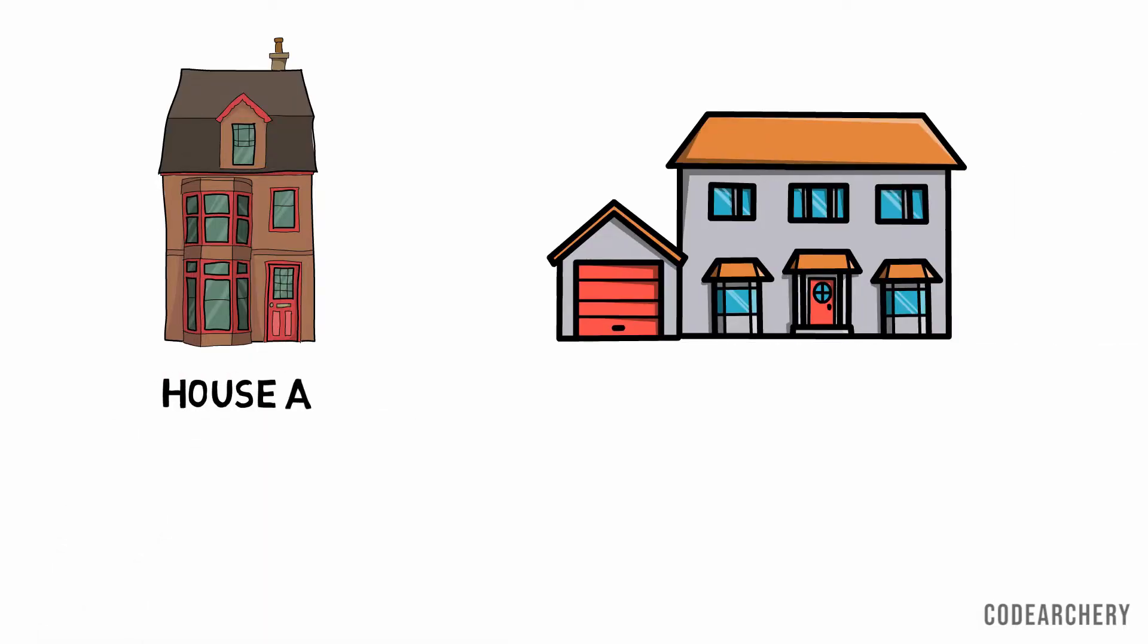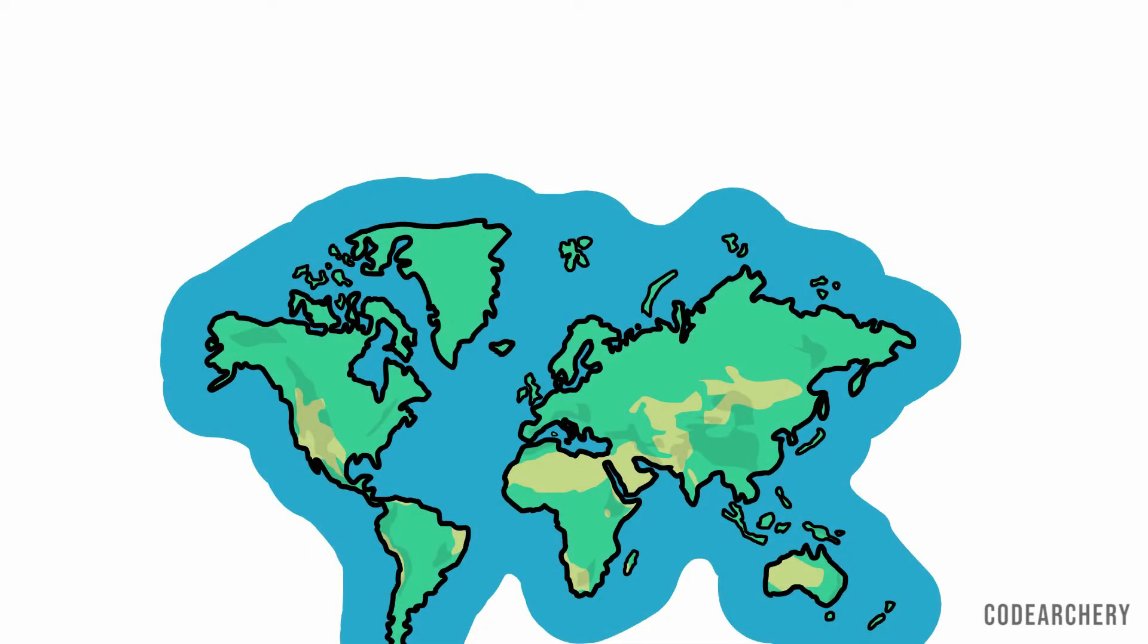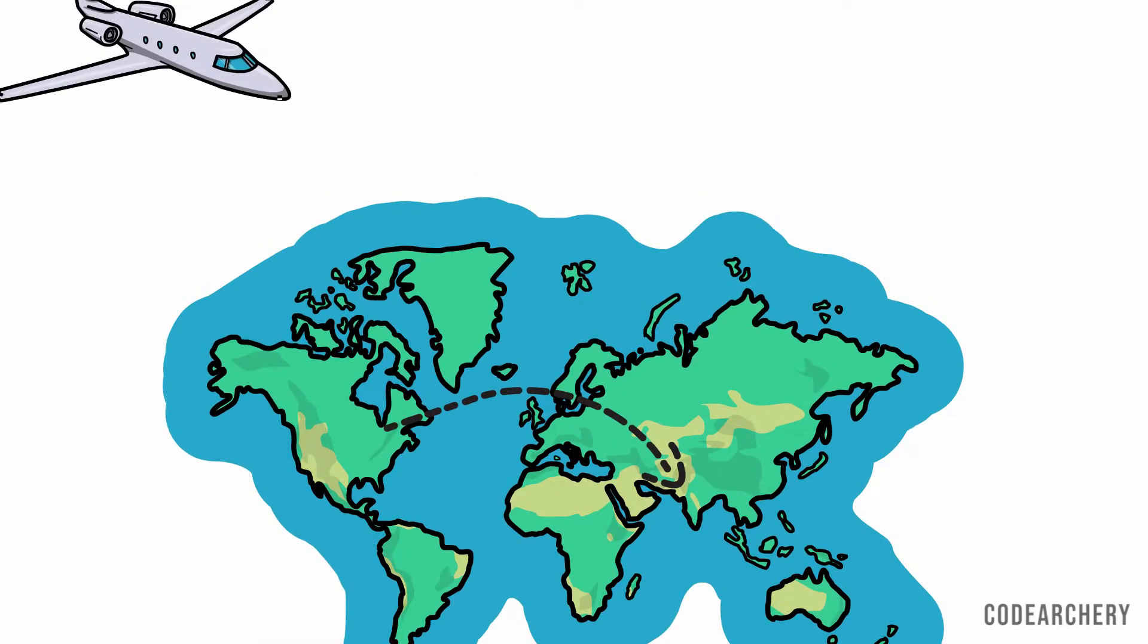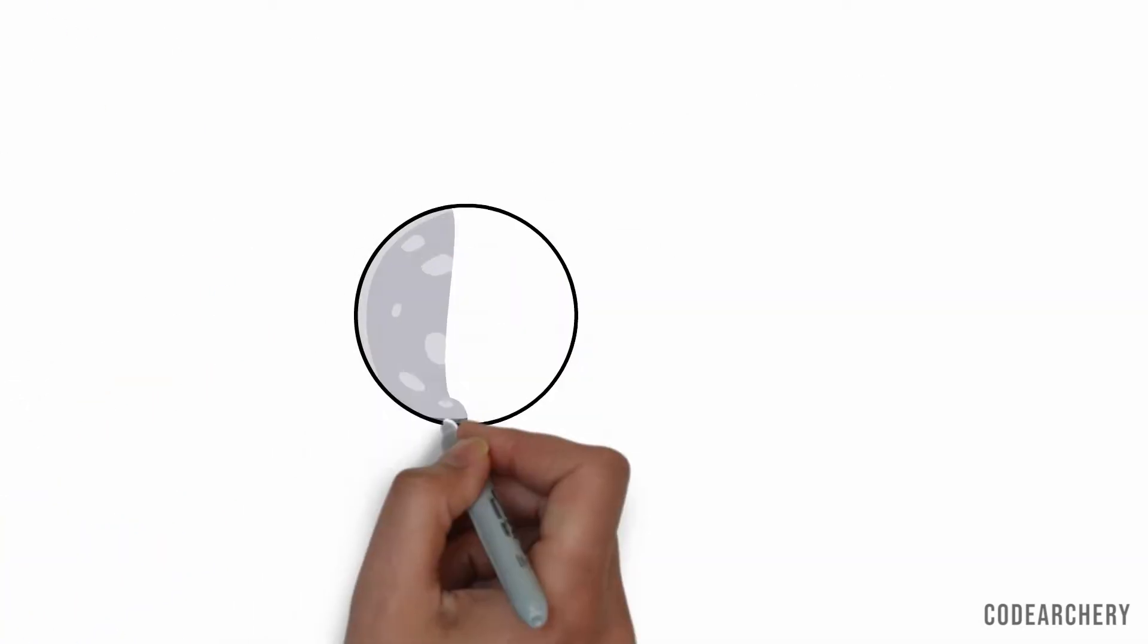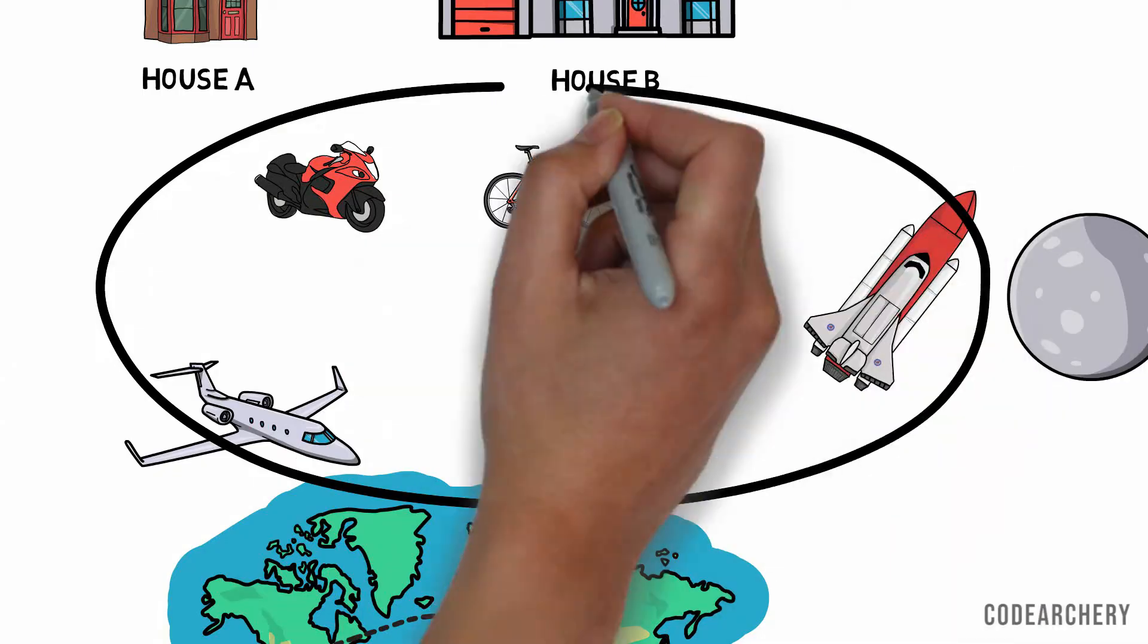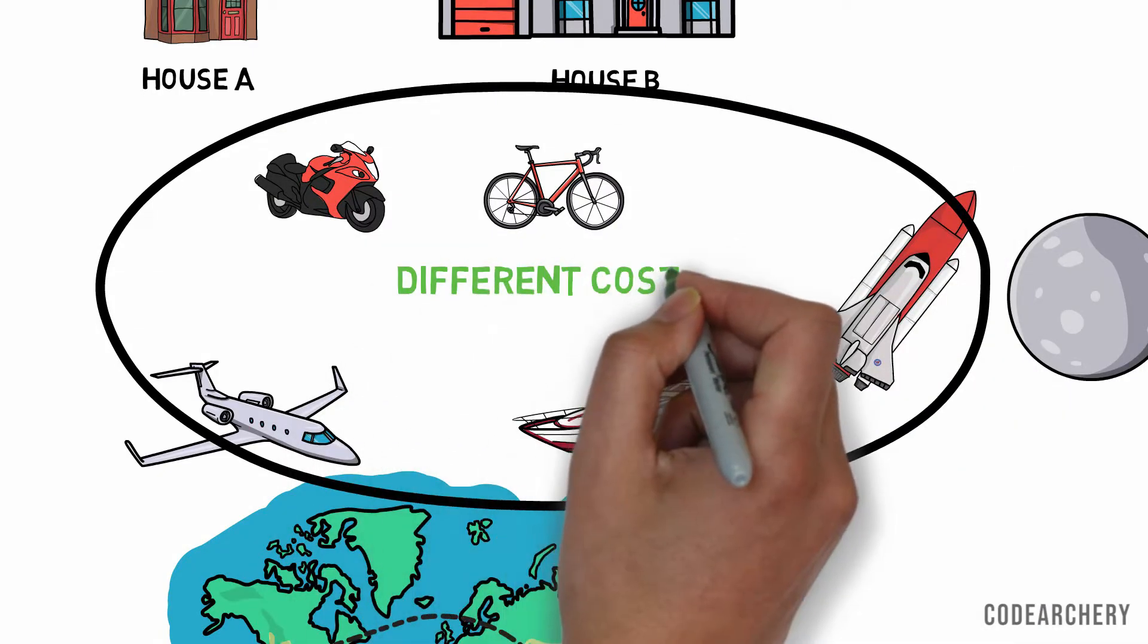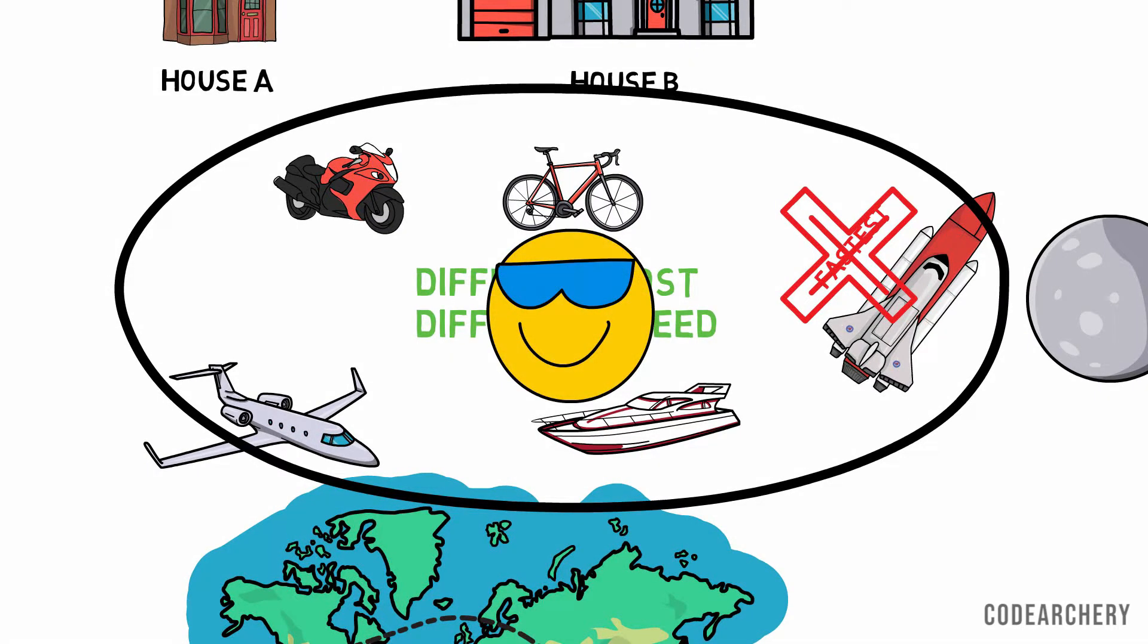Okay, suppose you want to travel from house A to house B, so you got three options. You can travel by a bicycle or by a bike or you can just walk. Now if you want to travel from one continent to another, you will use either a plane or a cruise ship. Or if you want to go to the moon, then you have to contact Elon Musk and you will need to buy a rocket. The point I am trying to explain here is all these machines have different cost and speed. Just because rocket is the fastest, we can't use a rocket to travel from house A to house B. I know you guys are smart, you know all these things already.